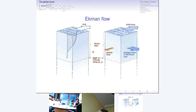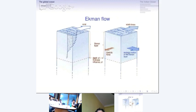Let's look first at Ekman flow. If you were to take a tank of water and pull a stiff aluminum sheet on top of it — a shear force on the water surface — what would happen to the water? In classical fluid flows, the water moves in the direction in which you pull the sheet. That is what you find in classical fluid flows.